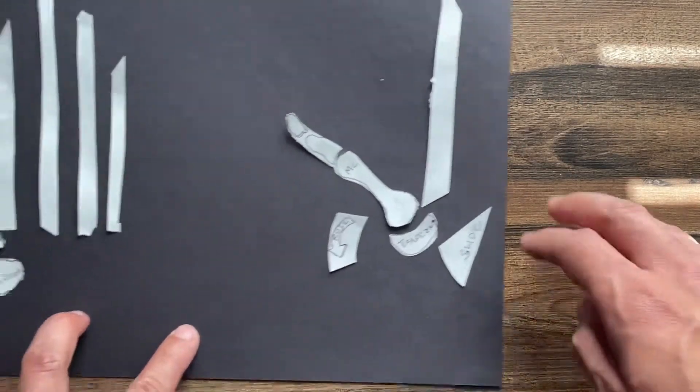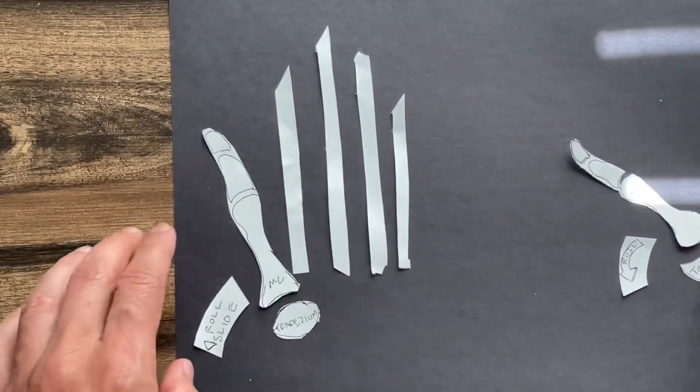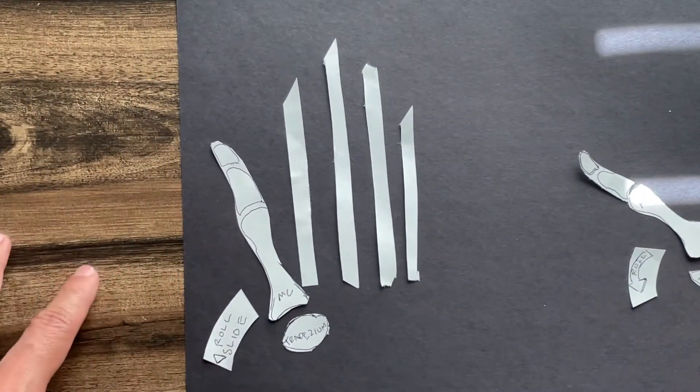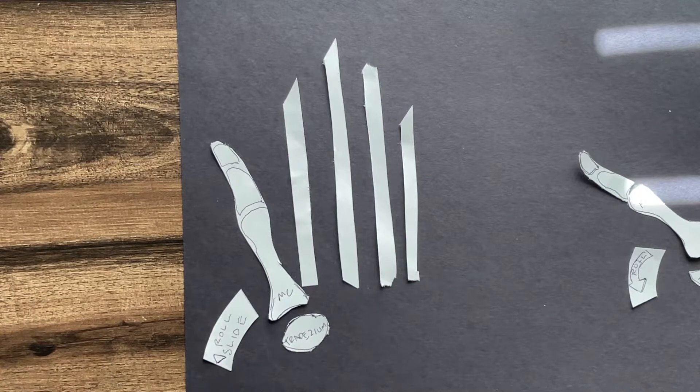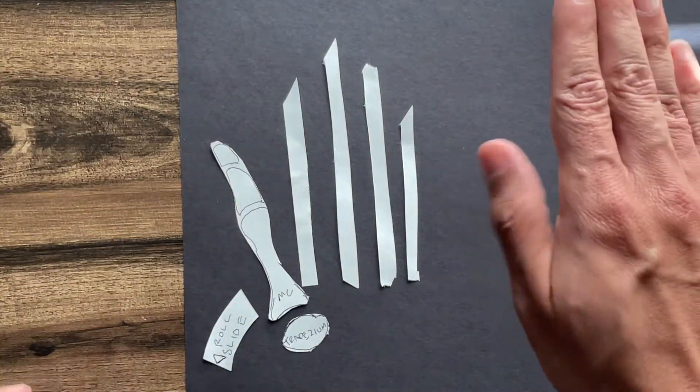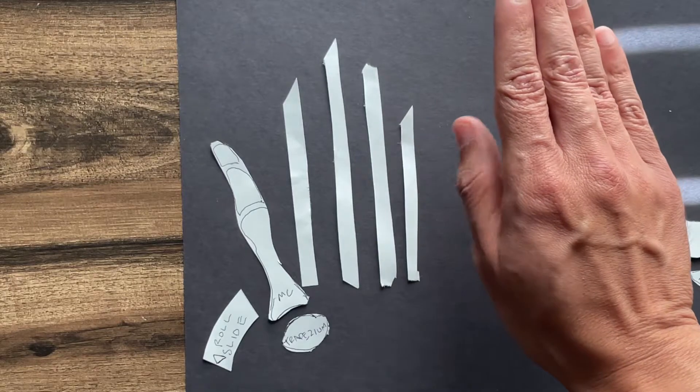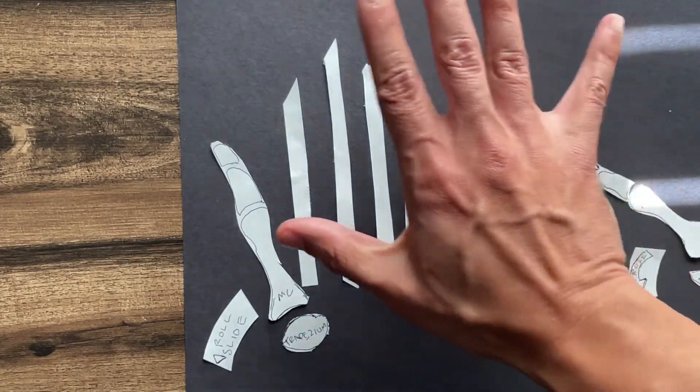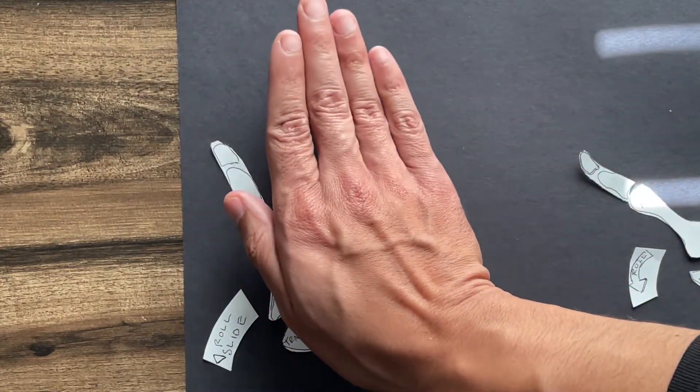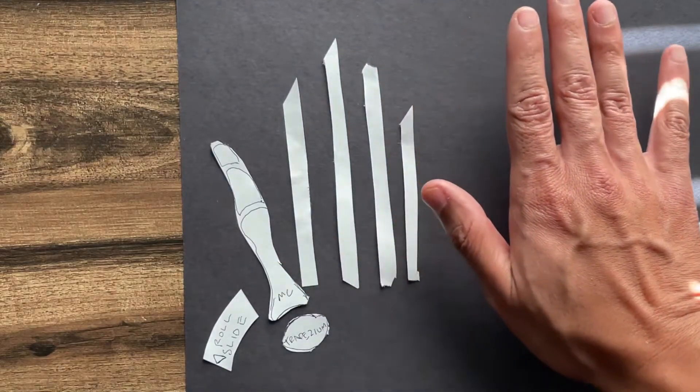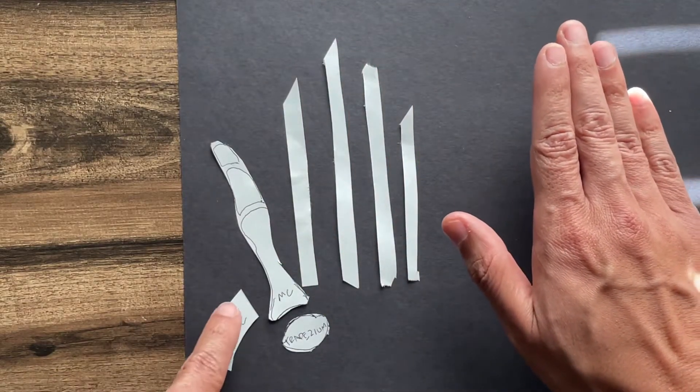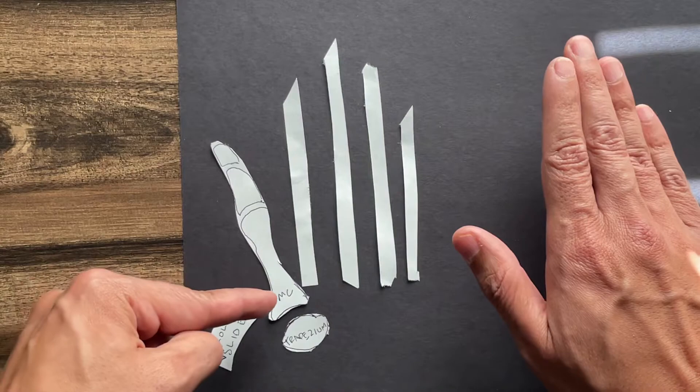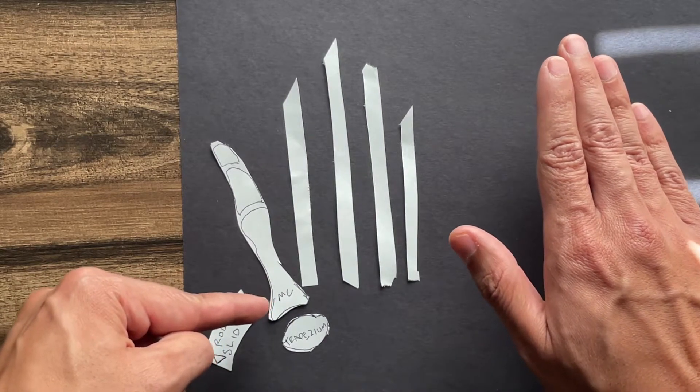When we are flexing and extending, that changes a little bit because again it's a saddle joint. It changes depending on which direction you're going. Now we're flexing and extending from this viewpoint. Our hand is like this, and so now the metacarpal is going to be concave.